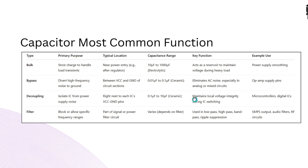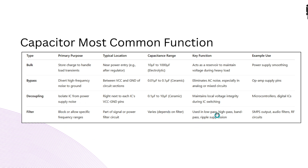Decoupling capacitors balance between bypassing high-frequency noise and maintaining local voltage integrity during IC switching — handling sudden power supply demands from transistors or switching circuits. Filter capacitors block specific frequency ranges as part of signal or power filter circuits. They are used in low-pass, high-pass, band-pass filters and ripple suppression, with applications in SMPS output, audio filters, and RF circuits.